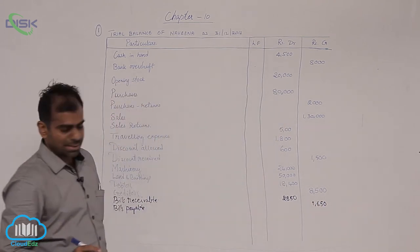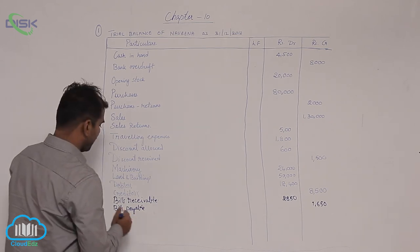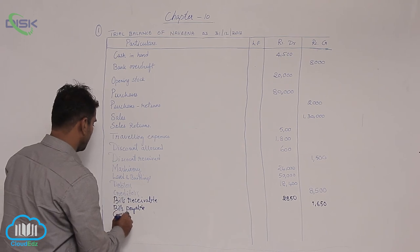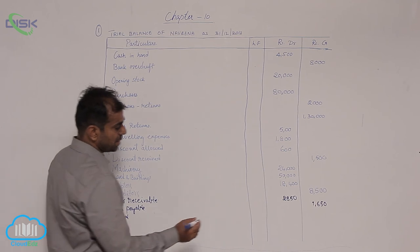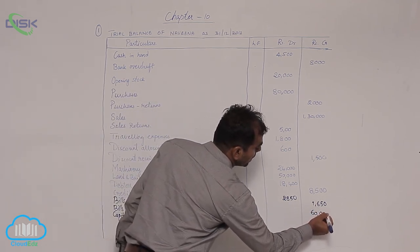Now coming to the next item, it is capital. So you know capital shows credit balance. Capital shows credit balance. So capital of 60,000. So credit balance 60,000.